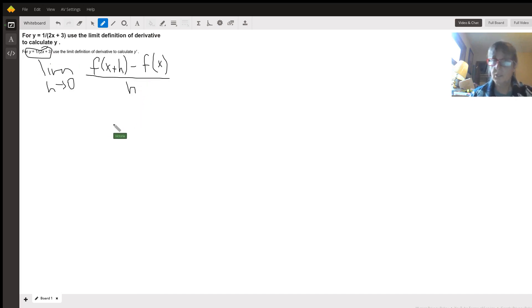So here's the limit definition. The first thing we need is f of x plus h. And so let's remember – first of all, we're going to replace this y with f of x. So our original formula, f of x, is 1 over 2x plus 3.